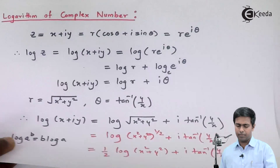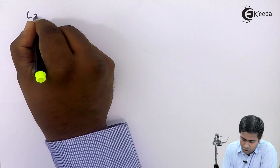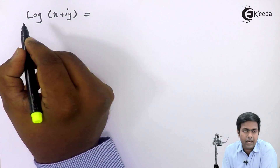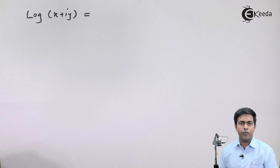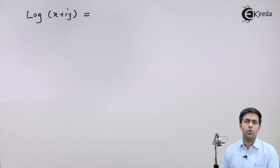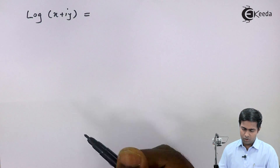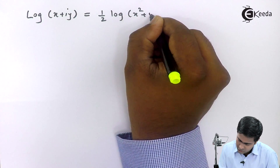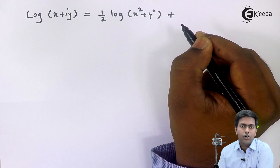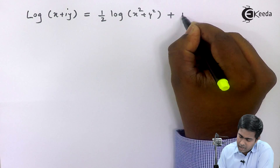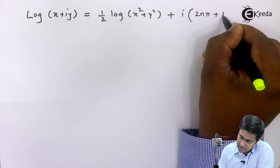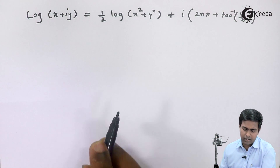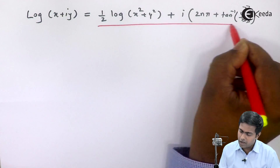To get the general value, we add 2n pi to theta. So the general value is: capital L of x plus iy equals one half log of x squared plus y squared, plus i into 2n pi plus tan inverse of y by x. This is the formula to find out the general value of the logarithm of a complex number.